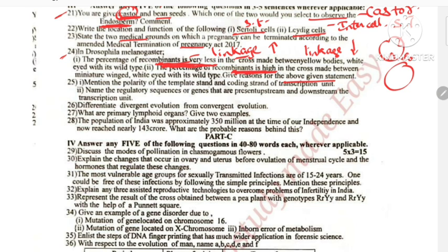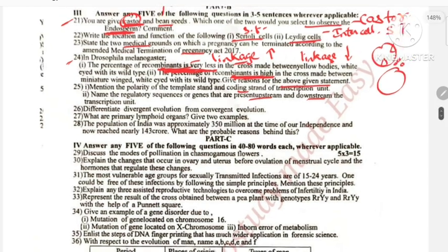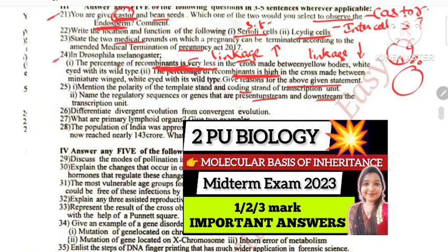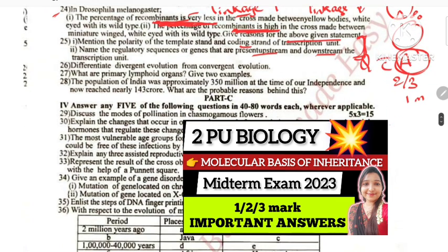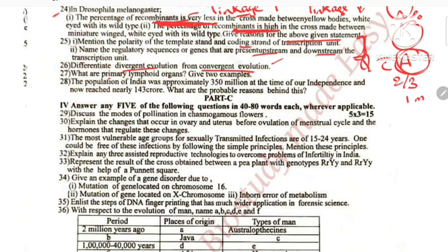This is cancer. Next, polarity of the template strand and coding strand — downstream and upstream. This is the answer. Molecular basis of inheritance and variations — questions with answers covered in a recent video. Next, divergent evolution and convergent evolution — direct question. Next, primary lymphoid organs: bone marrow and thymus. These are primary lymphoid organs where lymphocytes mature and become antigen sensitive.